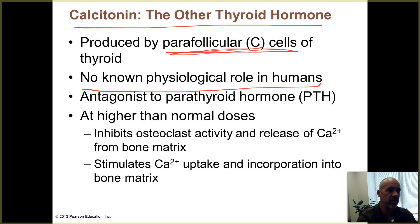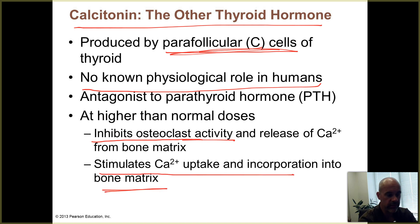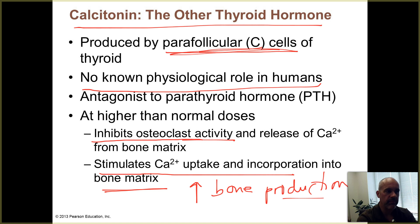Calcitonin has been used in some cases as an osteoporosis drug. At higher than normal doses, it inhibits osteoclasts — the bone-dissolving cells — and stimulates calcium uptake and incorporation into the bone matrix, thereby increasing bone production and helping increase bone mass. However, at the normal levels made in humans, it does not appear to have a known physiological role, though in some other mammals it does help maintain calcium levels in body fluids.